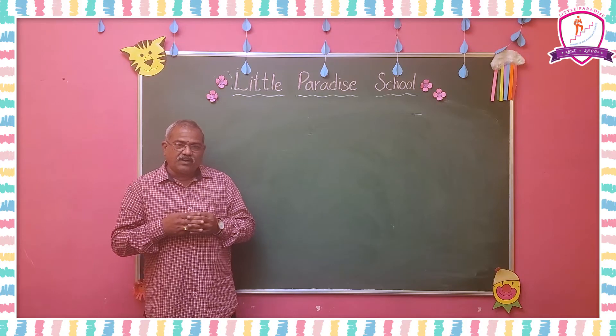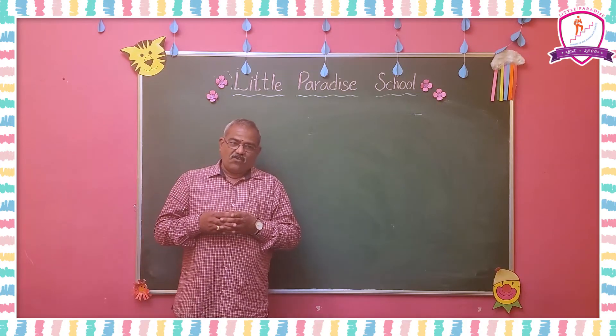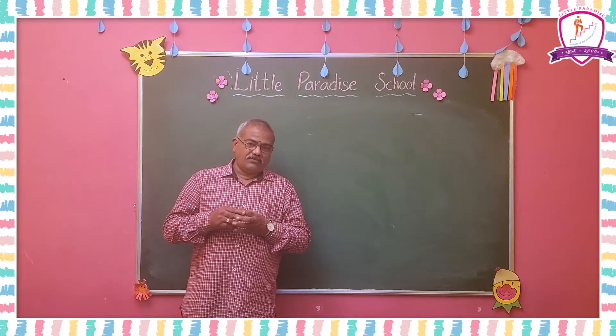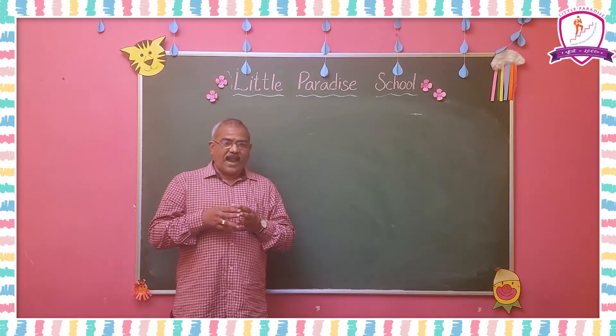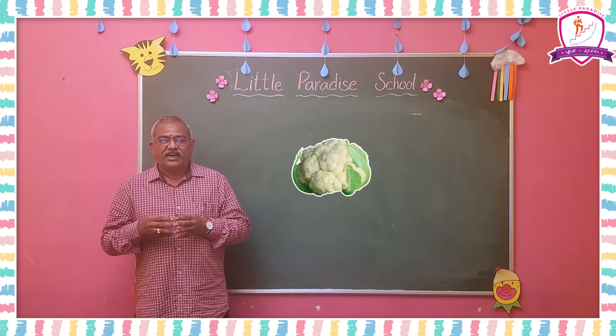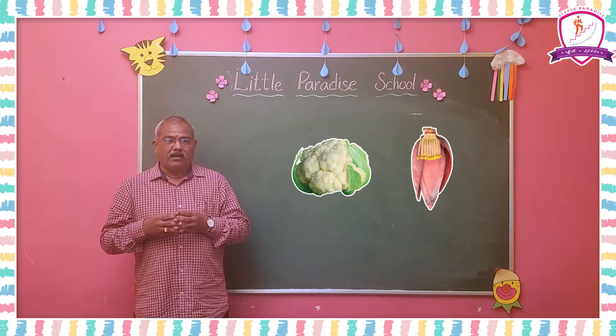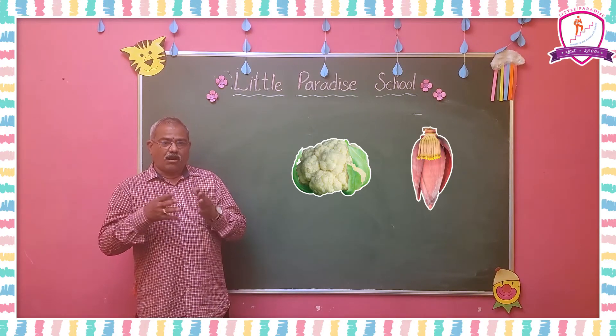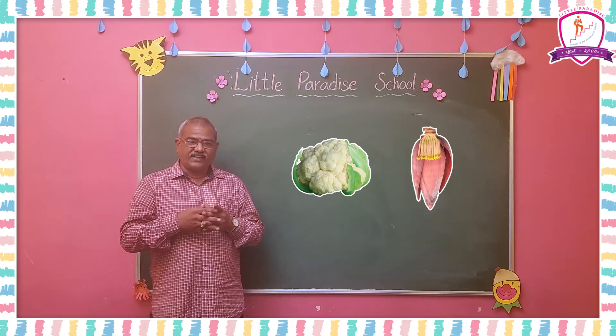Now we discuss about flowers. Flowers from certain plants like cauliflower and banana are used as vegetables.